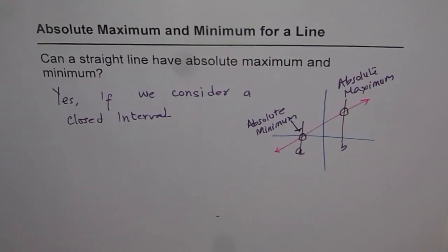And our variables will be bound from either both sides or from one side. So if there is a boundary, then there will be absolute maximum and or minimum, depending on a few more conditions.